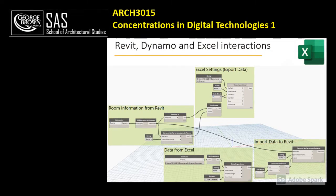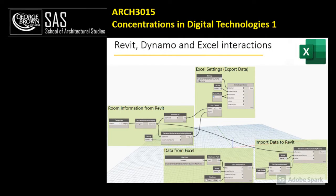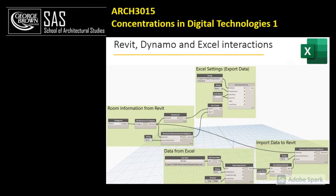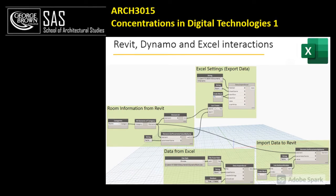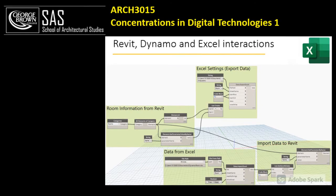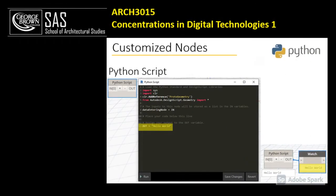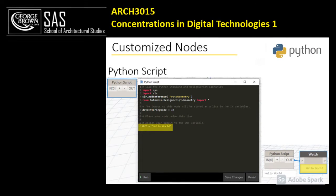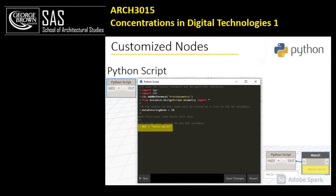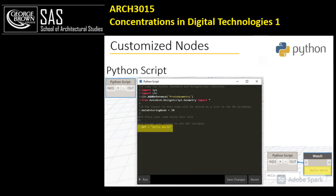We further talk about Revit, Dynamo, and Excel interactions. Dynamo is a good tool to mediate between Revit and Excel. We learn how to import data from Dynamo to Excel and from Excel to Dynamo and eventually to Revit. This is very helpful for cost analysis or exporting files for further analysis in Excel. We also talk about customization of nodes and how we can use Python to write our own scripts in Dynamo — additional information for students who want to pursue writing their own code in Dynamo and Revit.